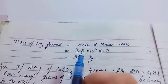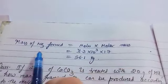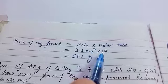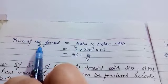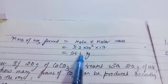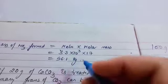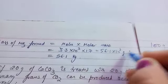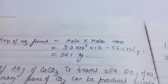Now convert moles of NH₃ to mass. Mass = moles × molar mass. Molar mass of NH₃ = 14 + (1 × 3) = 17 g/mol. So mass = 3.3 × 10³ × 17 = 56.1 × 10³ g. Converting to kg, the answer is 56.1 kg of ammonia formed.